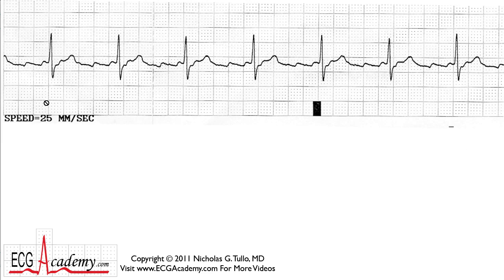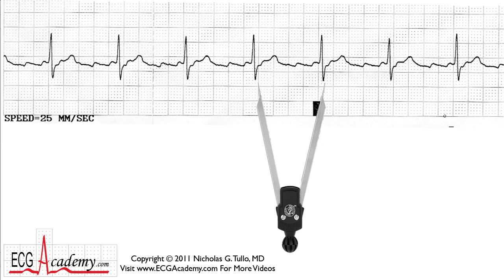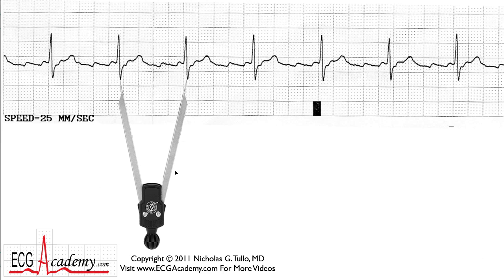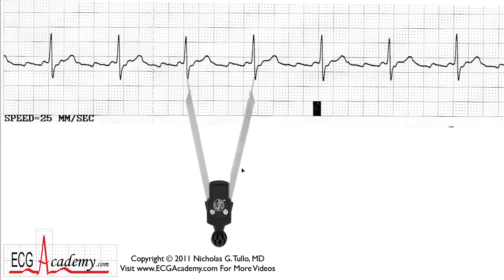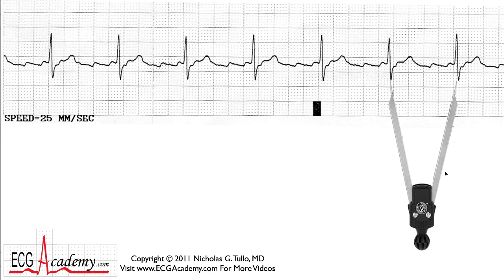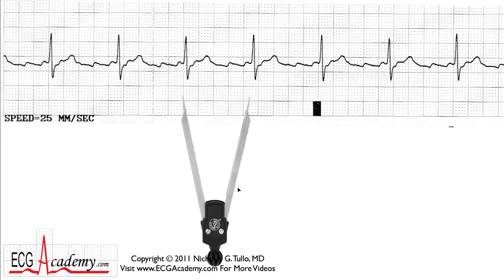Let's look at the forest first. You see the QRSs kind of marching through and they look pretty regular. Let's grab our calipers and take a look to see whether they are indeed regular. Put them down — I happen to have them at the right rate — and the QRSs certainly do appear to be very regular. What's the rate? If we count heavy boxes: 300, 150, 100, 75, 60 — it's between 60 and 75 beats per minute, so we'll call it 68.